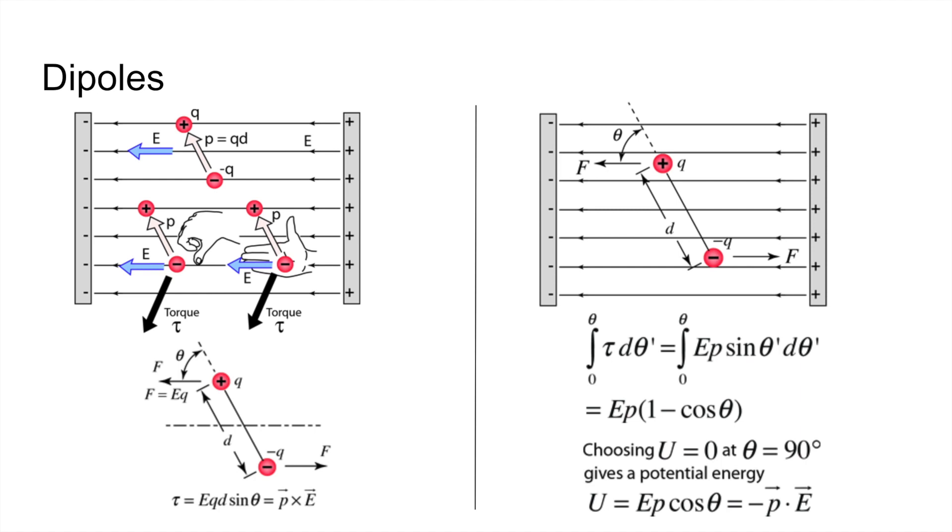The torque and potential energy of a dipole are given by these equations. You can see the derivation of torque there—I'm not going to go over that—and you can see the derivation of potential energy here. The torque is given by the cross product of the dipole moment times the electric field, and the potential energy is given by negative the dot product of the dipole moment times electric field.